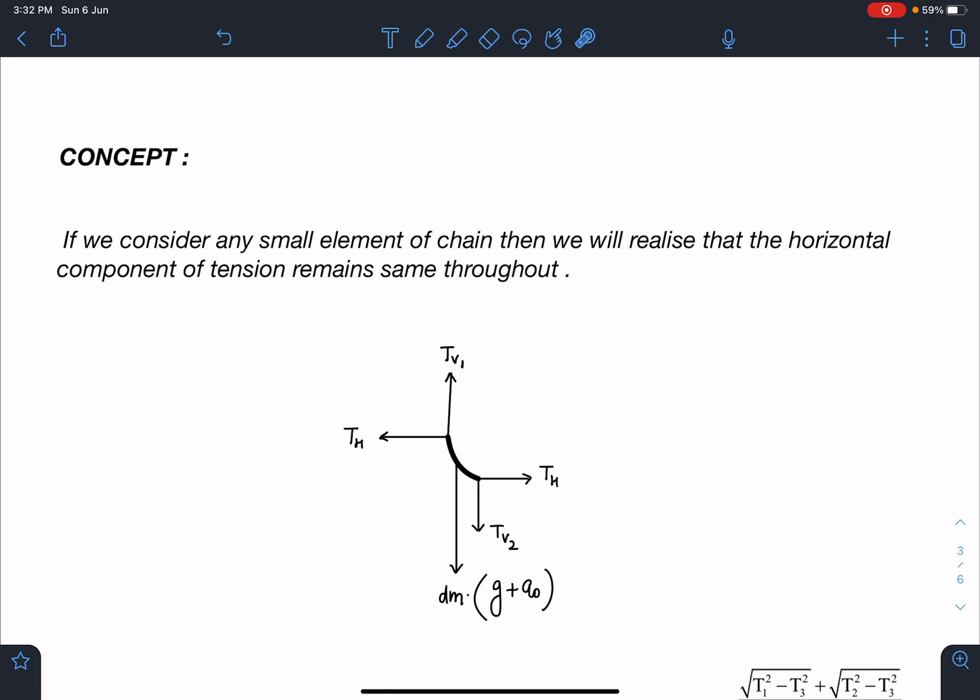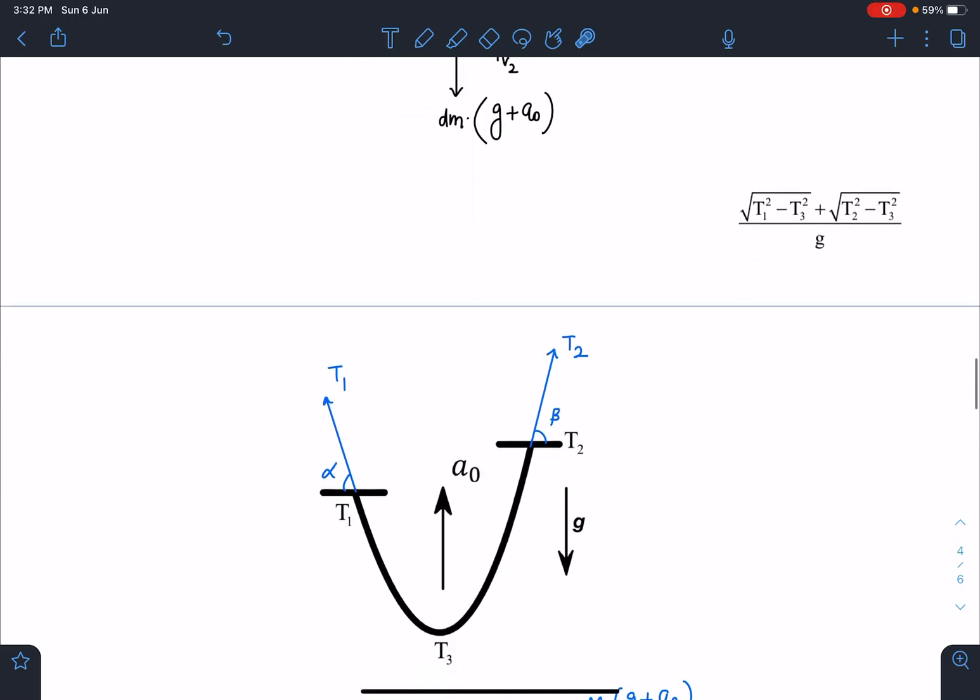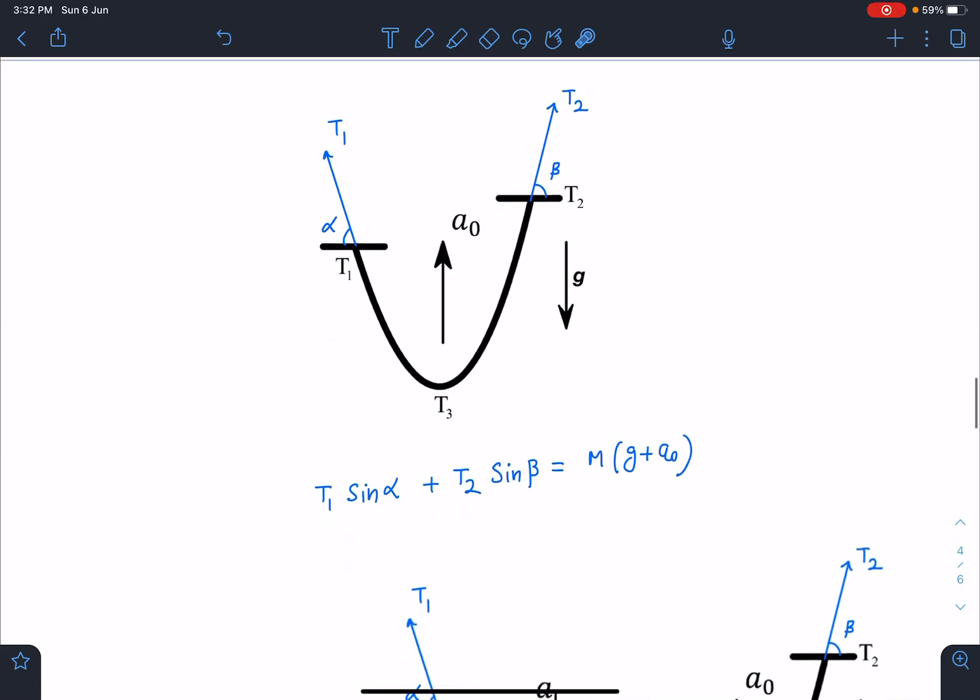Now if we see the free body diagram of this entire system, we can see the effective weight here is M(g + a₀), and tensions' vertical components are going to balance it. Let's say the chain is making angle of α and β here, so tension will be along the chain. So I can say T₁sinα + T₂sinβ = M(g + a₀).